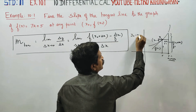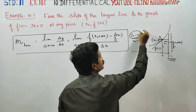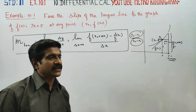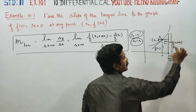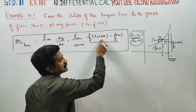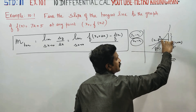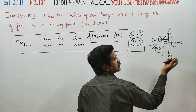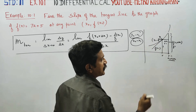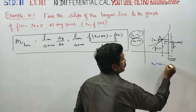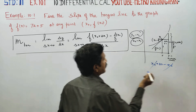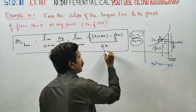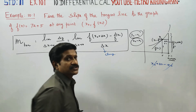The slope formula comes from y2 minus y1 over x2 minus x1 — that is, change in y by change in x. The change in y values is f of x0 plus delta x minus the original y value. The change in x is x0 plus delta x minus x0, which is just delta x — a small change in the value of x.